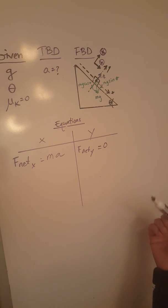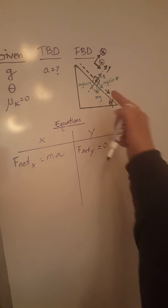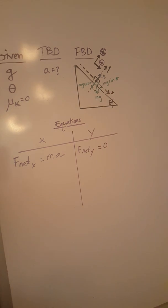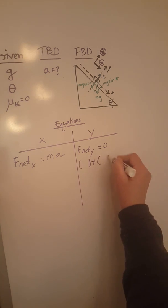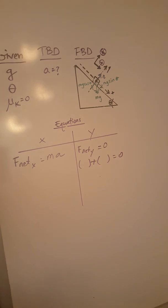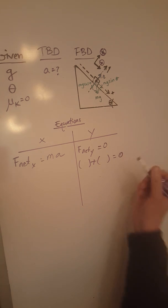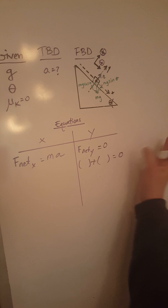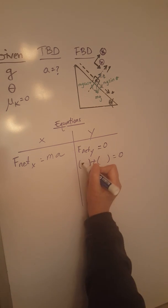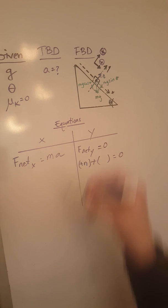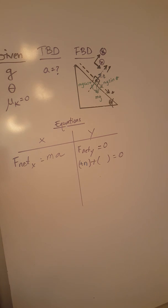Now we can continue with developing these equations. For F net y, we are going to have two forces. As you can see, one of them is going upwards, the other one is going downwards. So the vector sum of these two forces must be equal to zero. The one going upwards is going to be a positive normal force, and the one going in the opposite direction is going to be a negative mg cosine theta.